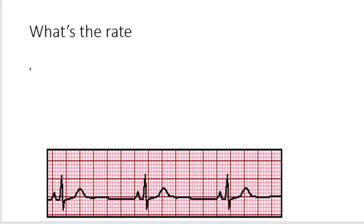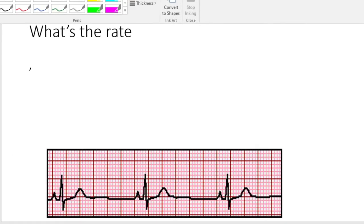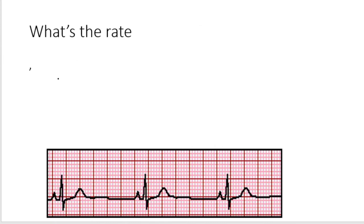Now moving on, we did calibration, then now we need to do the rate. So how do we establish rate on an ECG? Always remember that there are two methods. There is a shortcut, then there is a long cut or a long method.